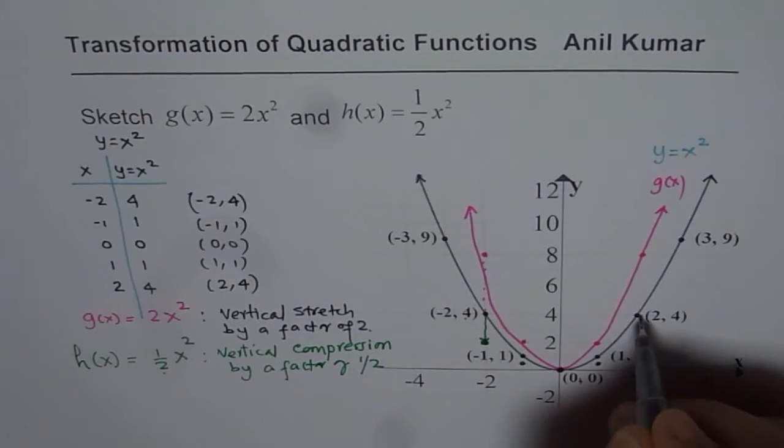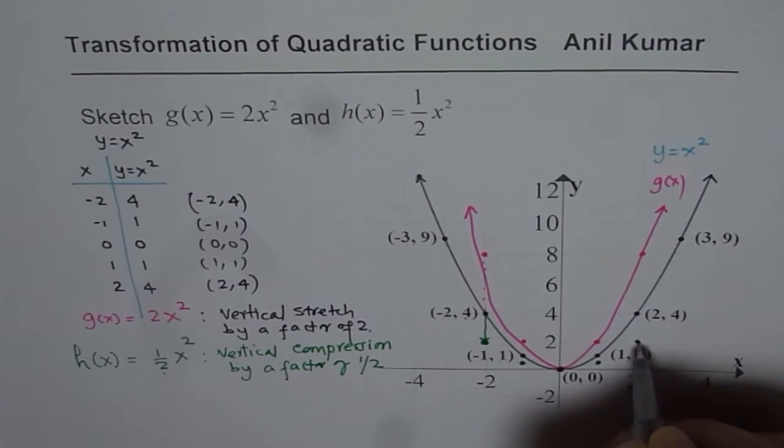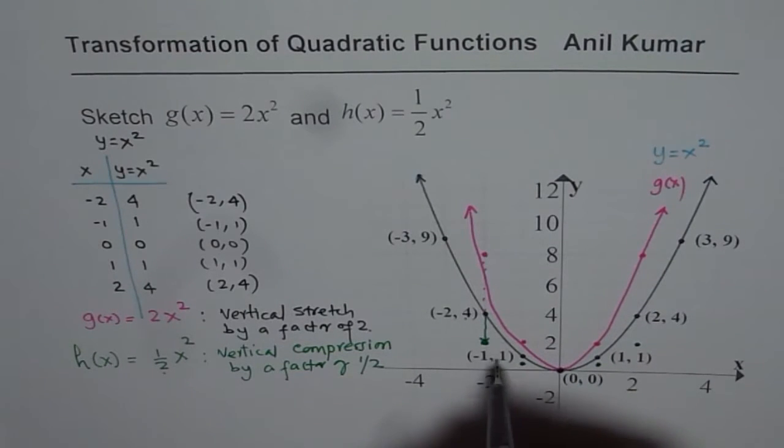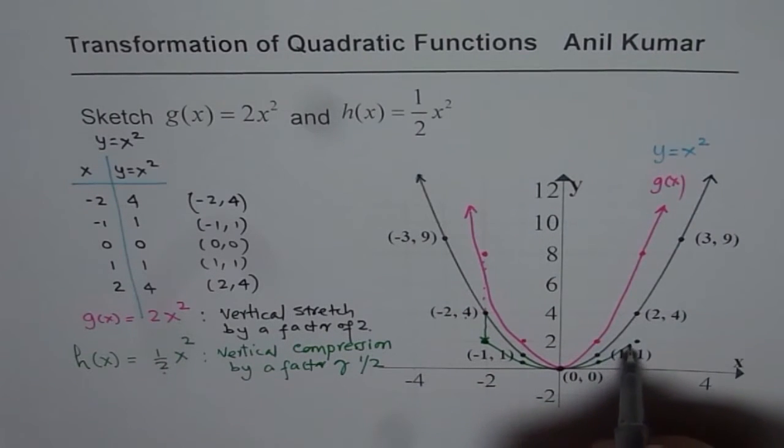Then from 4 we get half of 4 as 2. So we get a graph which is kind of like this. Connecting these points we get our parabola.